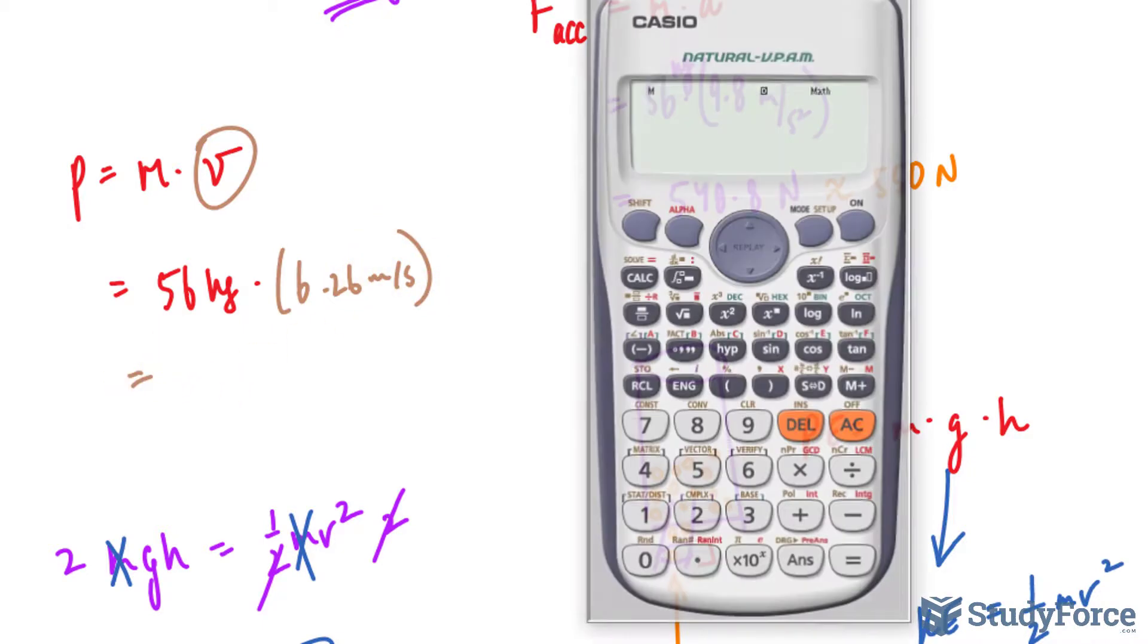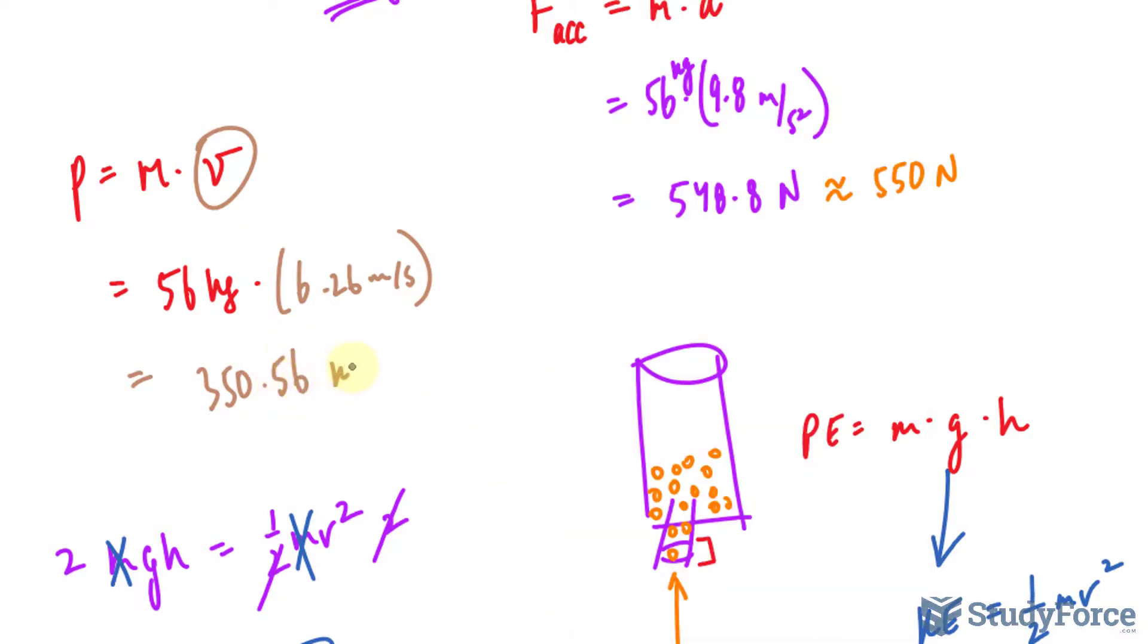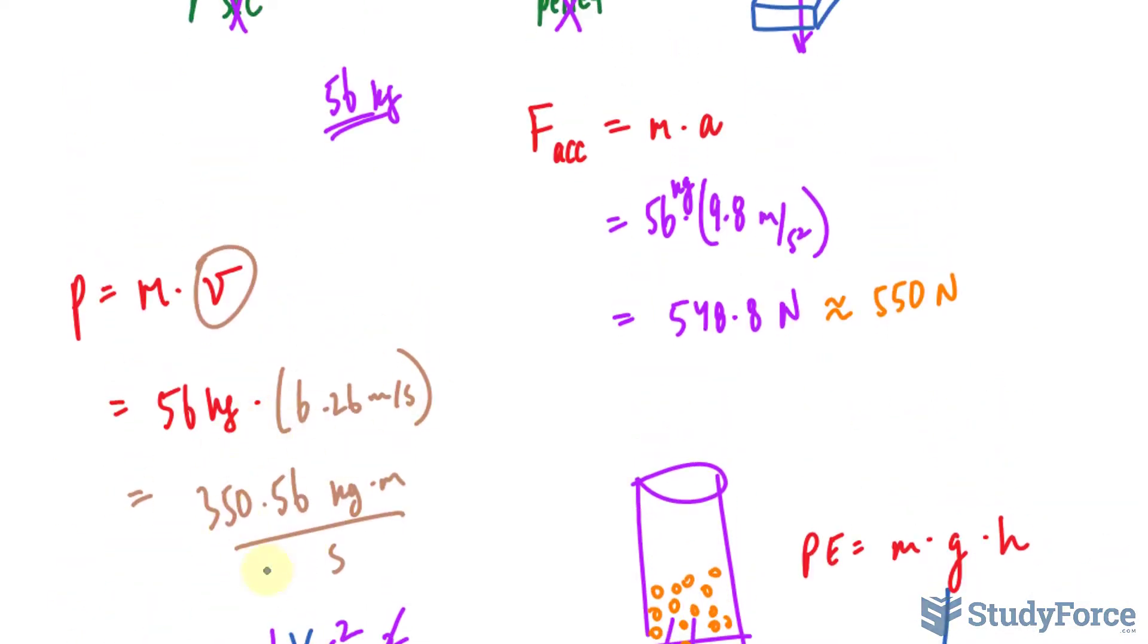This is good. So 56 times 6.26 makes 350.56 kilograms times meters per second. Now remember, we are looking for the force due to momentum.